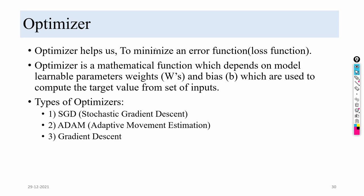An optimizer helps to minimize the error or loss function. It is a mathematical function that depends on model parameters like weights and biases, used to compute target values from inputs. Examples include stochastic gradient descent and Adam optimizer. In this paper, two optimizers were applied and stochastic gradient descent gave the best results.